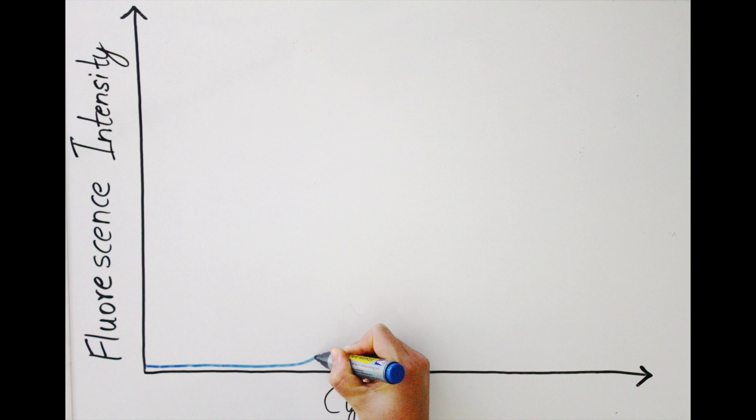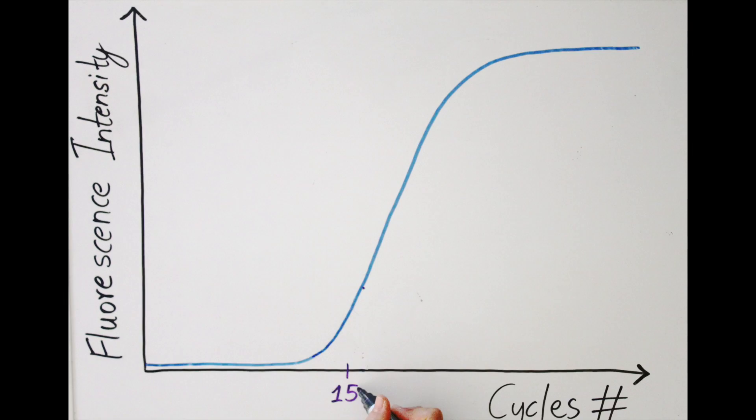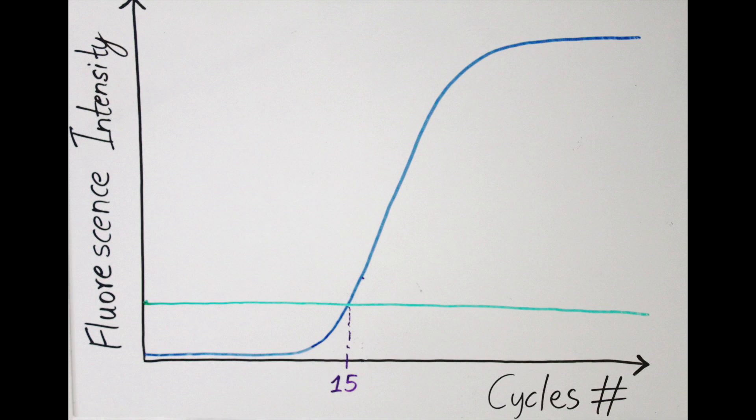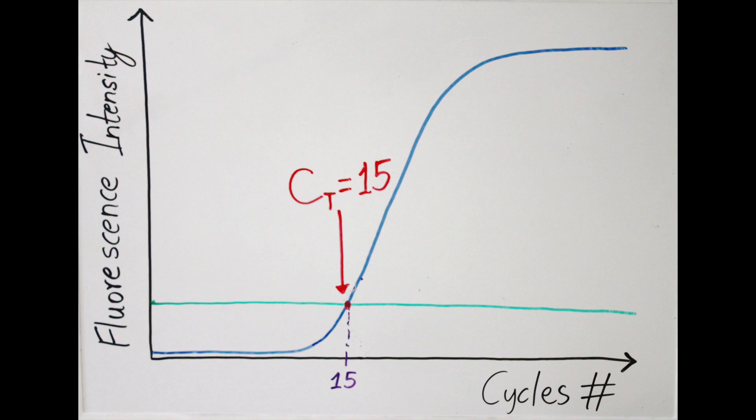Because there are few template strands to start with, initially there's a faint signal. Eventually, usually after 15 cycles, the signal rises above the background noise and can be detected. This is the threshold cycle, CT, the point from which all quantitative data analysis begins.